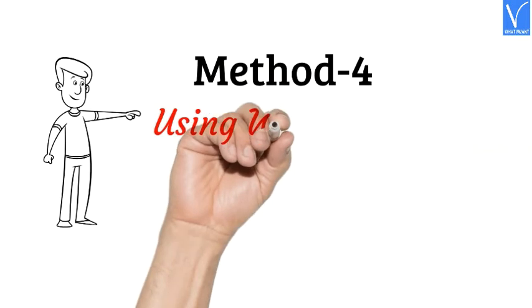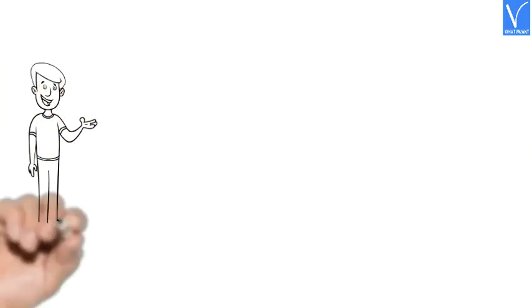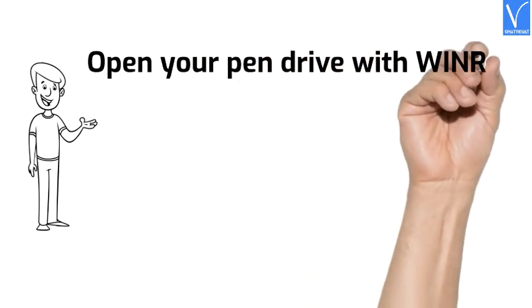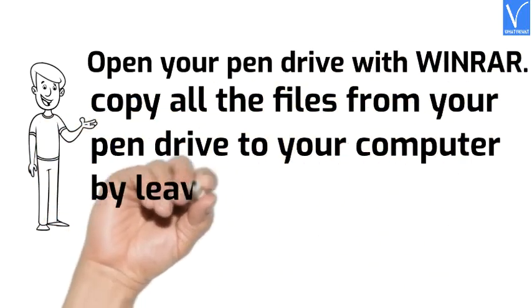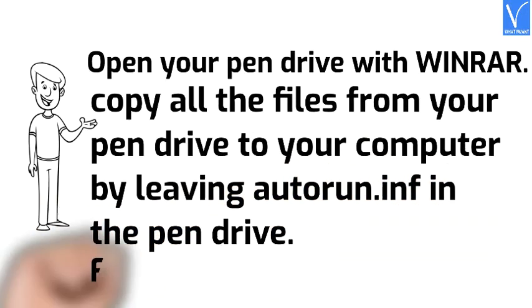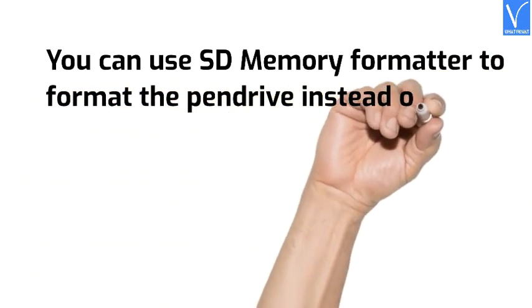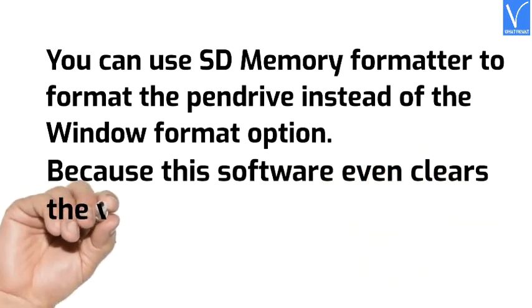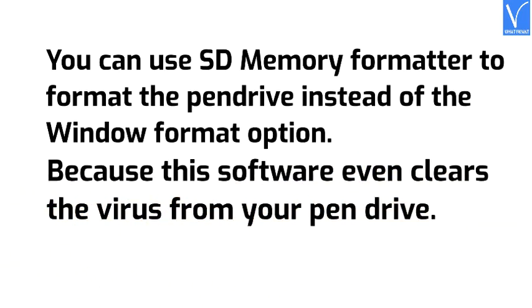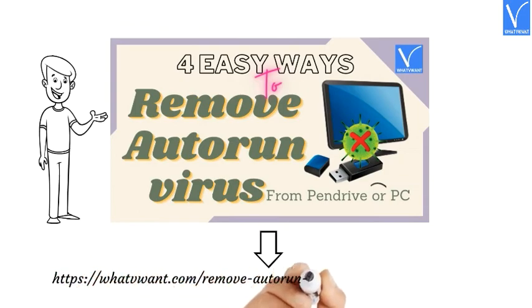Method 4: Using WinRAR and SD Memory Formatter. Open your pen drive with WinRAR and copy all files from the pen drive to your computer, leaving only the autorun.inf on the pen drive. Then format the pen drive. You can use SD Memory Formatter instead of the Windows format option, because this software clears the virus more thoroughly. That's it! For more information, visit our article — the link is provided in the description.